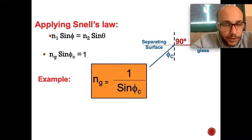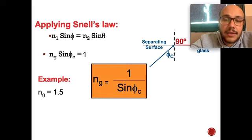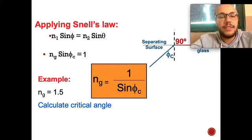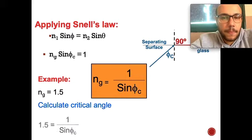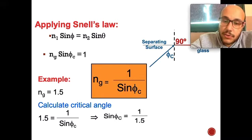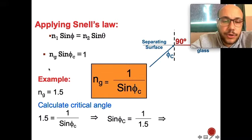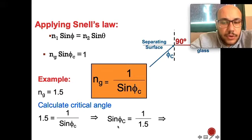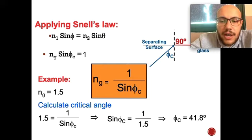Example: if n_glass = 1.5, then 1.5 = 1/sin(φ_c). Using cross multiplication, sin(φ_c) = 1/1.5. Using a calculator to find the inverse sine of 1/1.5, we get φ_c = 41.8°. That was all for the critical angle. Stay safe and goodbye.